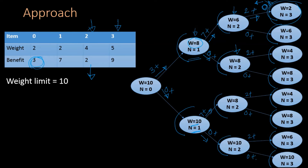At state w=6, n=3, the weight limit 6 is greater than item 3's weight of 5, so we can include item 3. Therefore this state returns benefit 9. Similarly, states where the weight limit is insufficient return 0, and states where the weight limit is sufficient return 9 by including item 3. The same logic applies to all remaining leaf states.